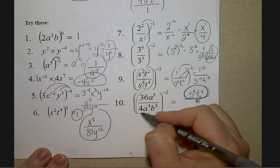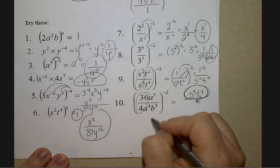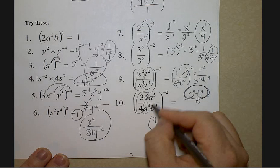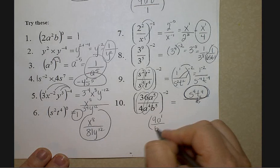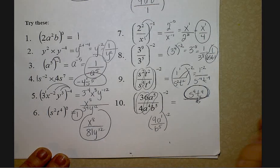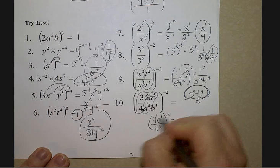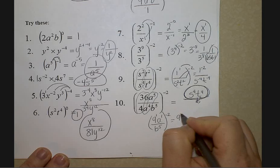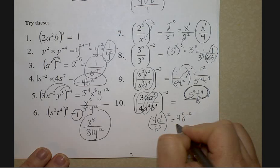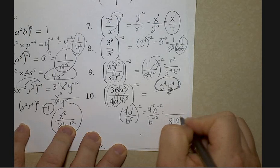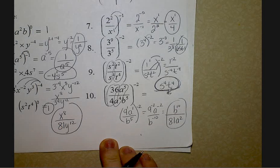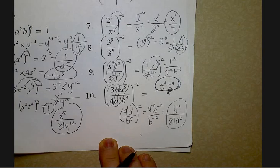Thirty-six divided by four is nine, larger numbers on top. Five minus four is one, larger exponents on top. And b to the fifth is all by itself on the bottom. Distribute the negative two to everything inside: nine to the negative two, a to the negative two, and b to the negative ten. Then make them happy — nine squared is 81.